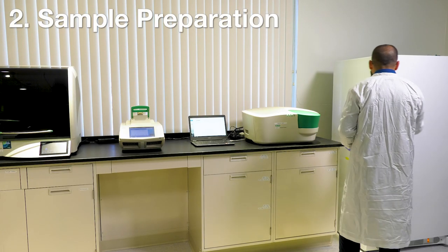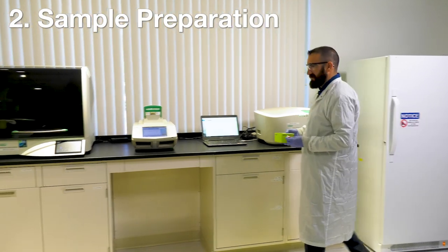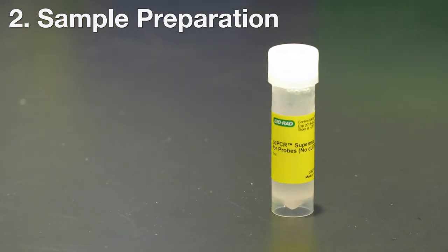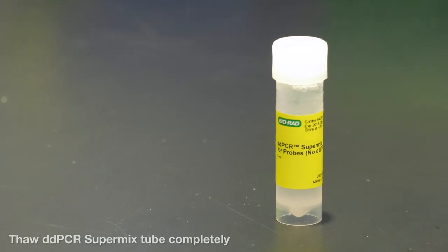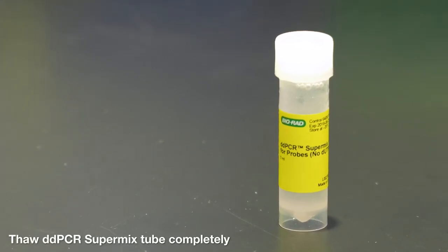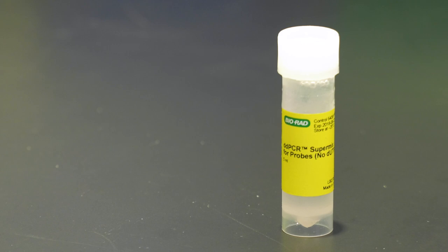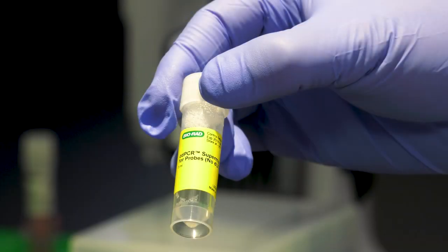To start, pull out a frozen tube of 2X DD-PCR SuperMix for probes, no dUTP, and thaw it to completion at room temperature, which will take about 10 minutes.